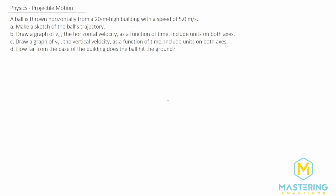Welcome to Mastering Solutions. In this projectile motion problem, they tell us that a ball is thrown horizontally from a 20-meter high building with a speed of 5 meters per second. We need to make a sketch of the ball's trajectory, then make two graphs — one of the horizontal velocity and one of the vertical component of the velocity. For part D, we need to figure out how far from the base of the building the ball hits the ground.